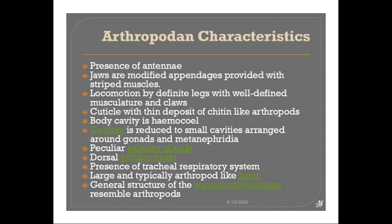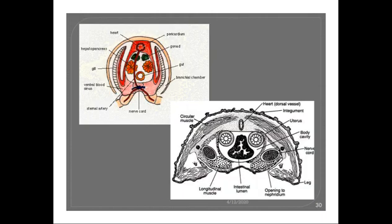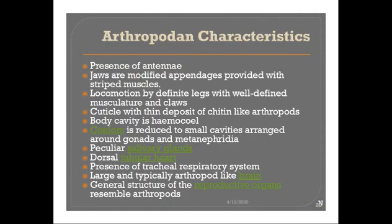Additionally, the coelom is restricted and reduced to small cavities arranged around the gonads or metanephridia. This is another feature relating Peripatus with Arthropoda. We can see here that the coelom is restricted to this region in both arthropods and Peripatus similarly, making it a shared characteristic.